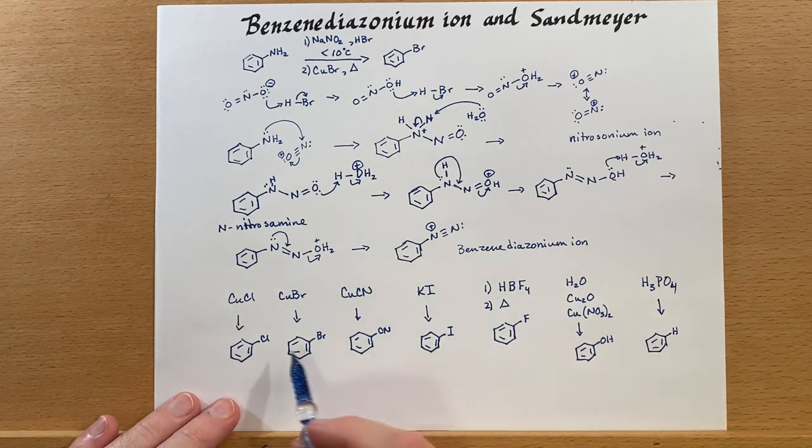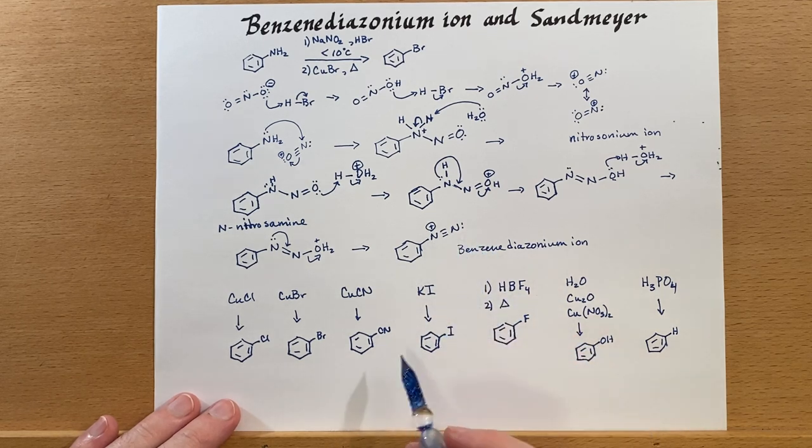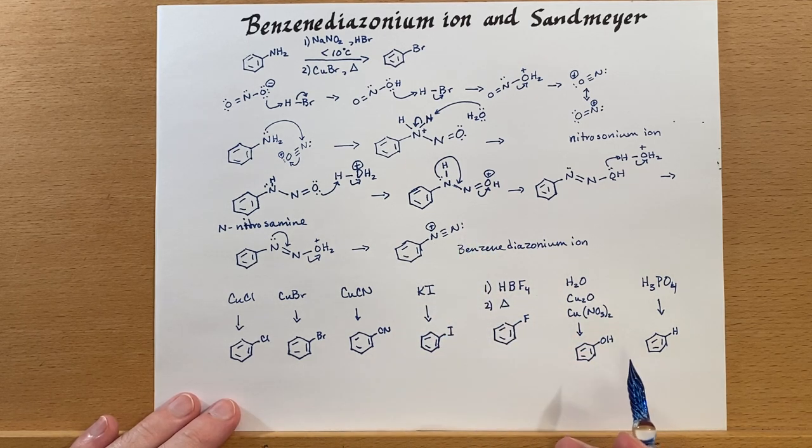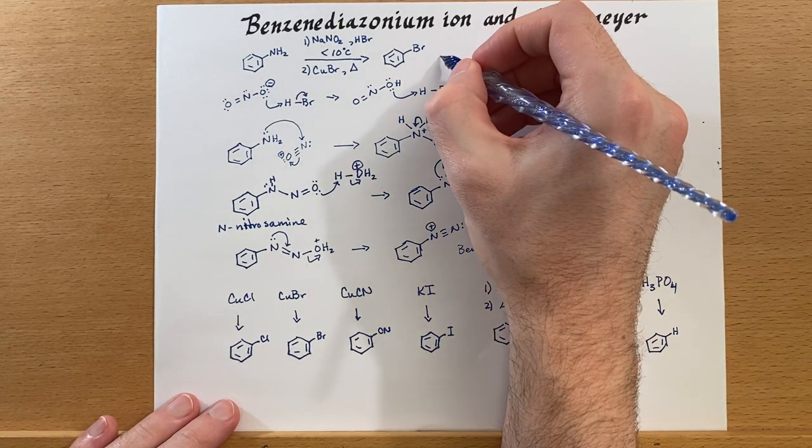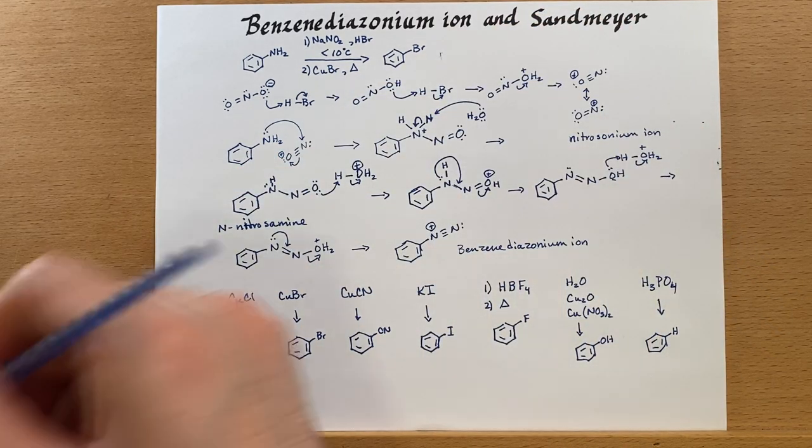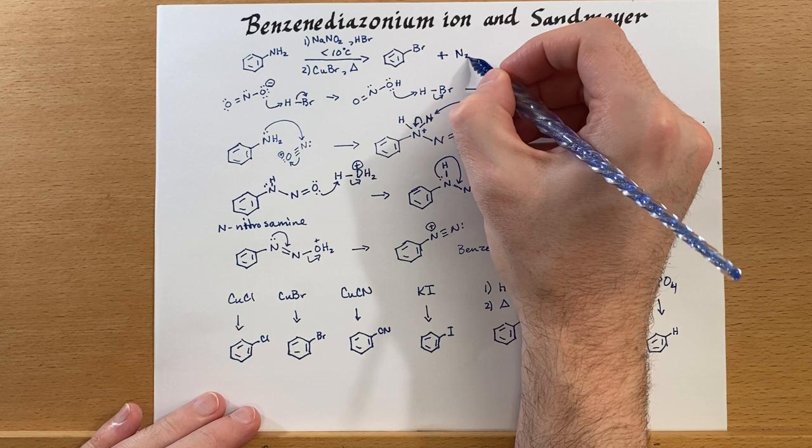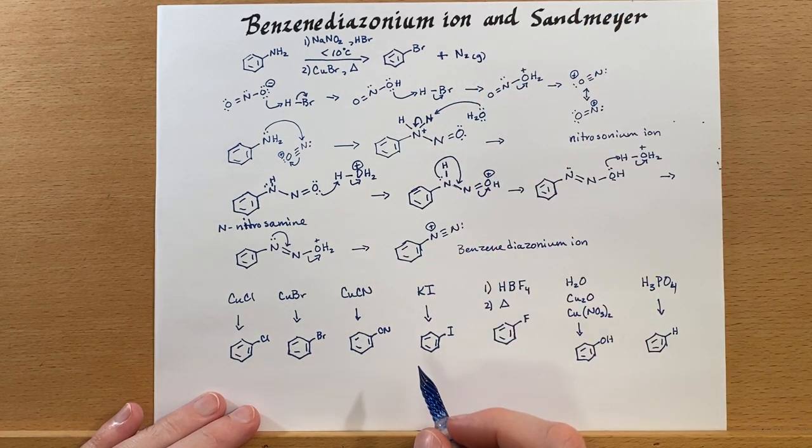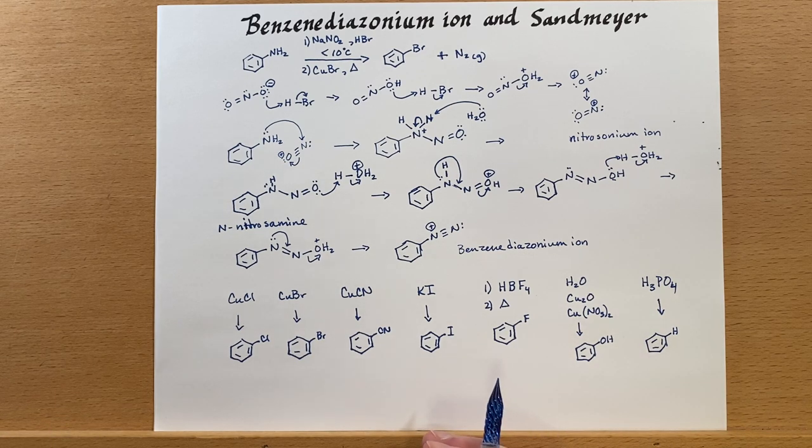So there's quite a number of reactions that we can do from this leaving group here. And of course, during the course of that reaction, we would generate nitrogen gas. So I suppose I should write that up here. So this is how to generate the benzene diazonium ion and how to use it in the Sandmeyer reactions.